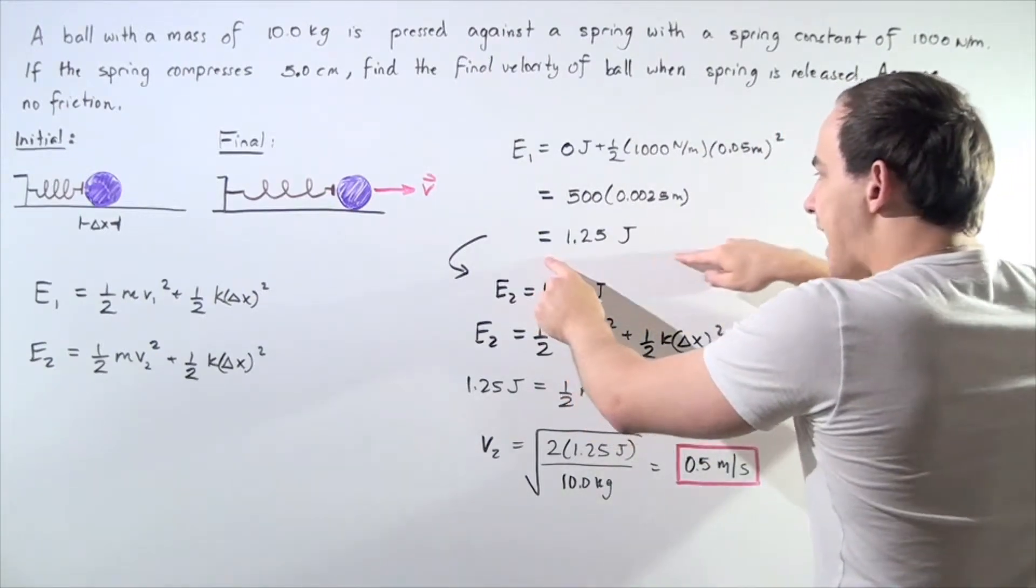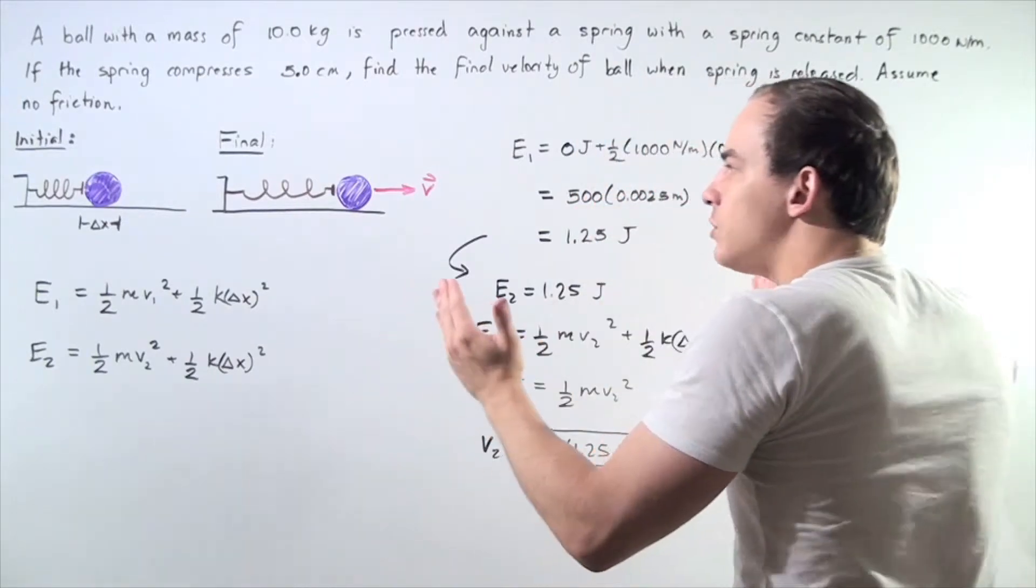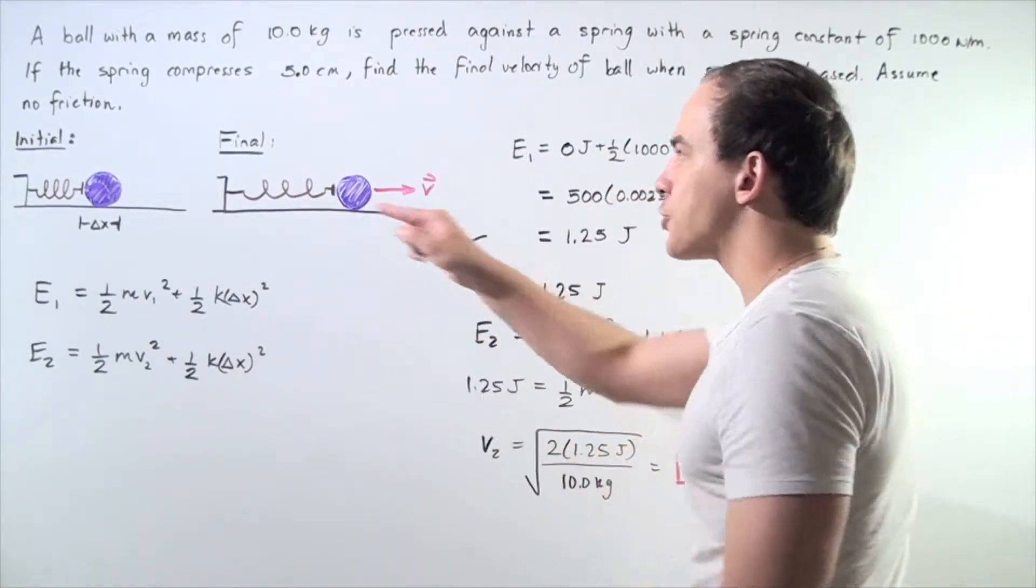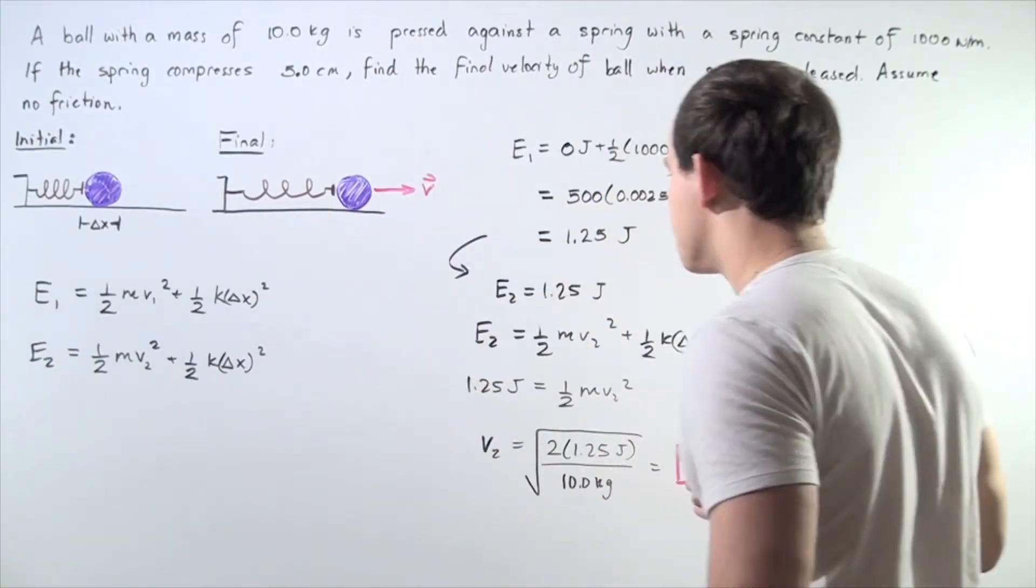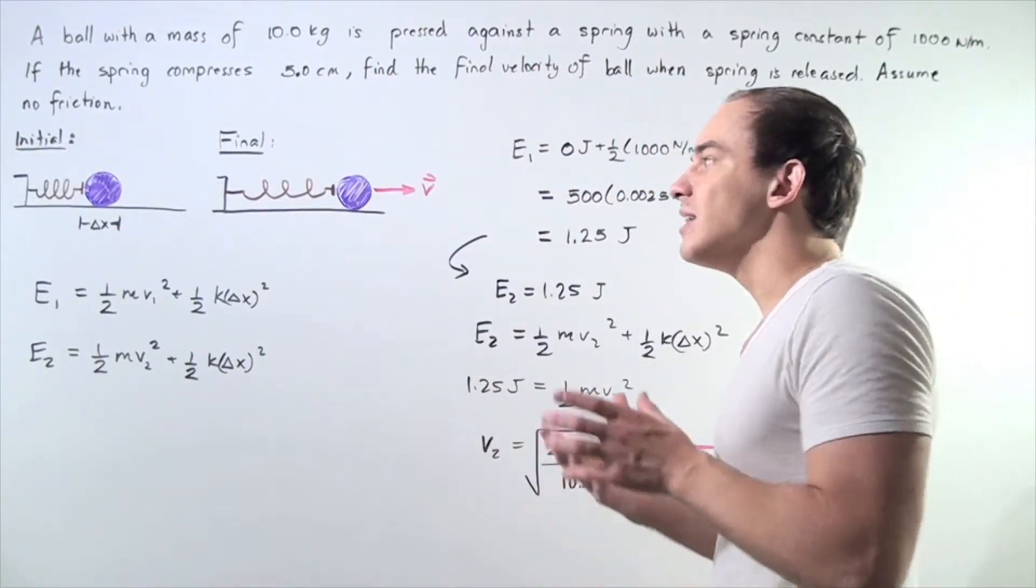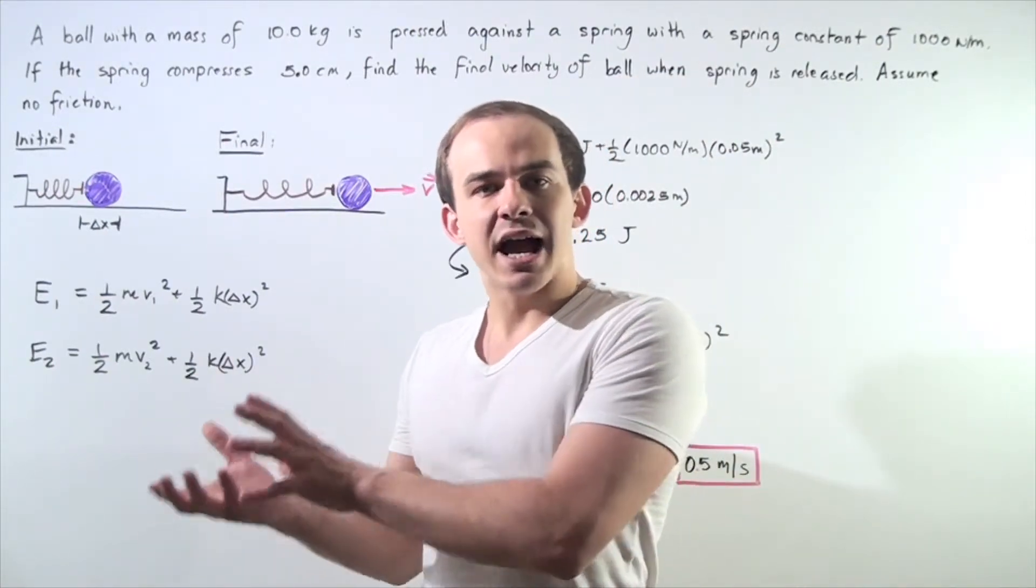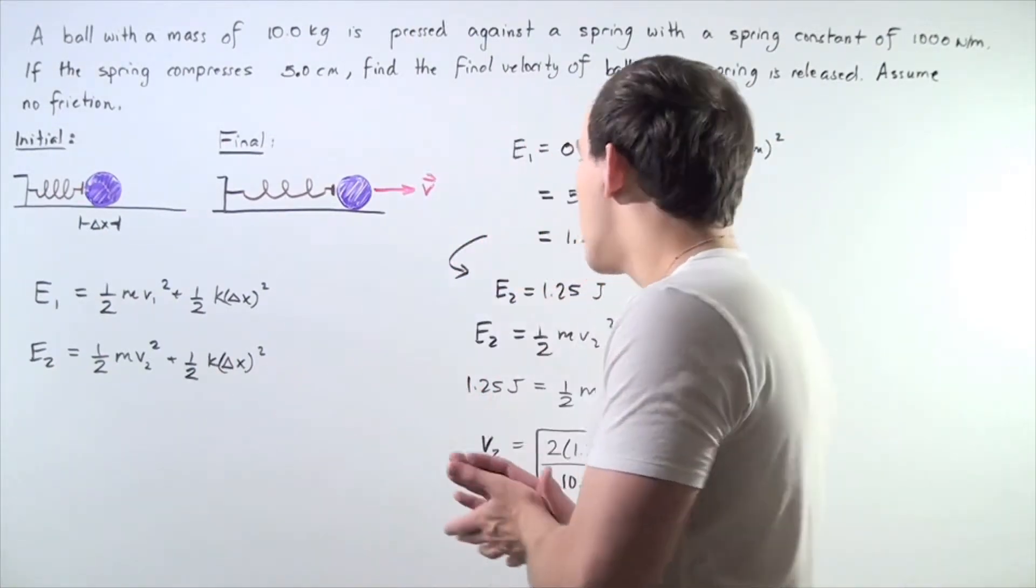So this is how much elastic potential energy is stored in our spring when we compress that spring a distance of 5 centimeters. So at the final position, all of that elastic potential energy will be transformed into kinetic energy, the motion of our object.